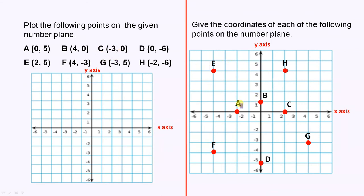So just write out the letters from A to H, and then write out the ordered pair for each of the letters.